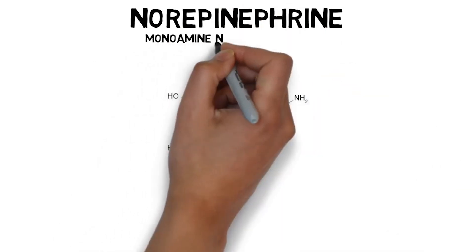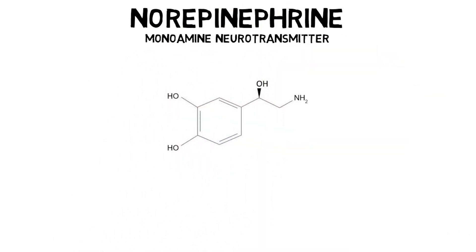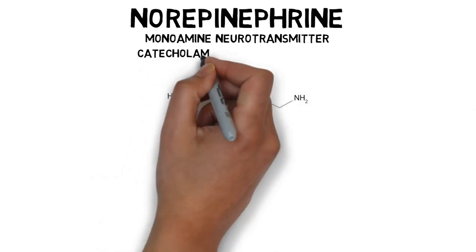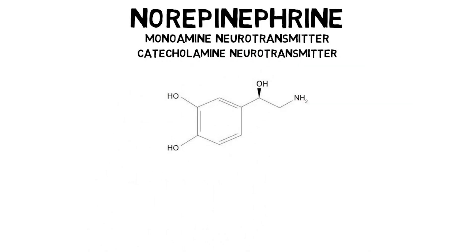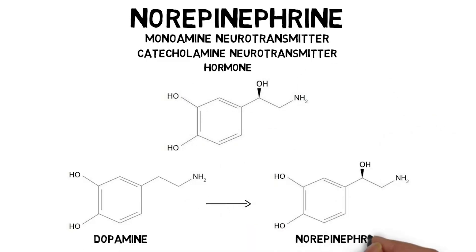Norepinephrine, also known as noradrenaline, is a monoamine neurotransmitter, a term that refers to its chemical structure and the fact that it is derived from an amino acid. It is also a catecholamine, again referring to its chemical structure and the fact that it contains a catechol nucleus. Norepinephrine also functions as a hormone. It is synthesized from dopamine in a reaction catalyzed by the enzyme dopamine beta-hydroxylase.